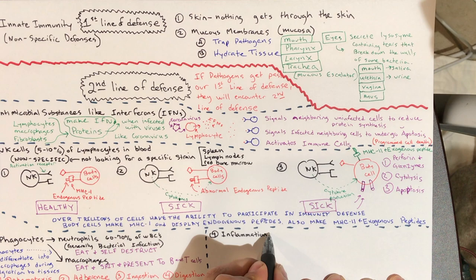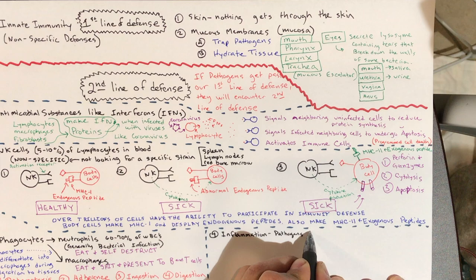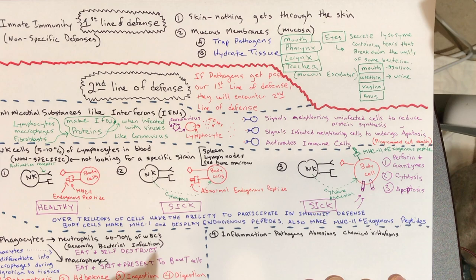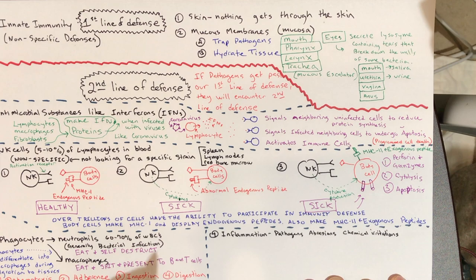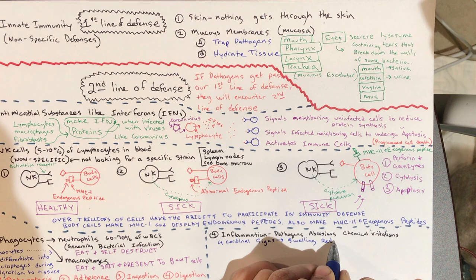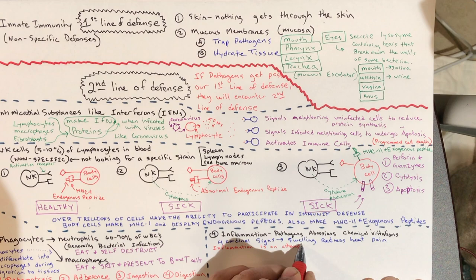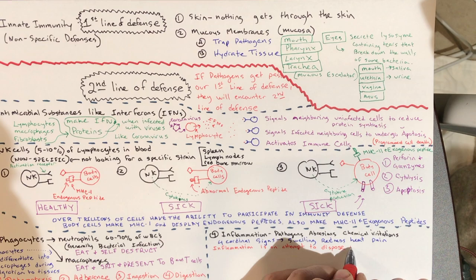The fourth component of the second line of defense is inflammation. This can occur from pathogens, abrasions, chemical irritations, and distortion of the skin. The four cardinal signs of inflammation are swelling, redness, heat, and pain. It's really an attempt to dispose of microbes and prevent their spread to the rest of the body.